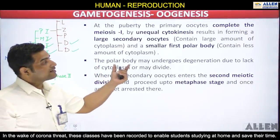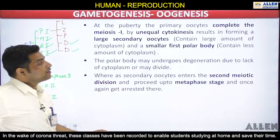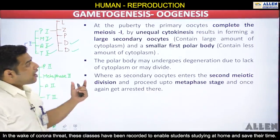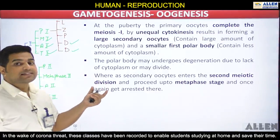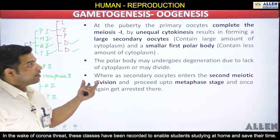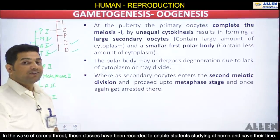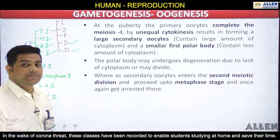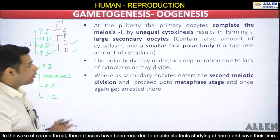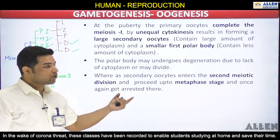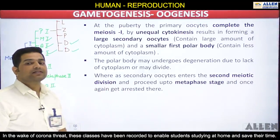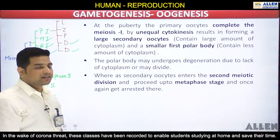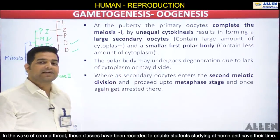The large secondary oocyte contains a large amount of cytoplasm while the smaller first polar body contains less cytoplasm. The first polar body may undergo degeneration due to lack of cytoplasm, or sometimes it also divides, but it has no significant function. So the polar body usually gets degenerated.